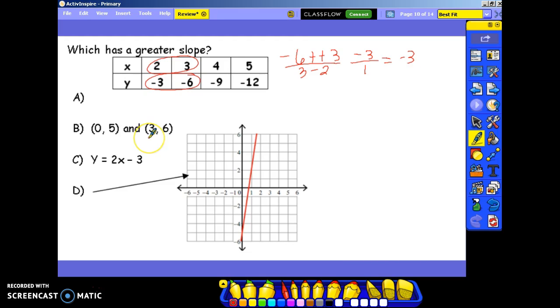For two ordered pairs, we work it out the same way, 6 minus 5 over 3 minus 0. 6 minus 5 is 1 over 3. 1 third is bigger than negative 3, so a is out. For c, if I have an equation, the slope is the coefficient of x, it's the number right in front of x. 2 is greater than 1 third, so b is out.